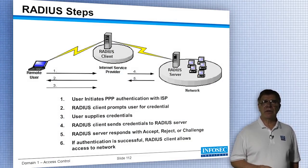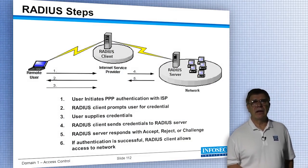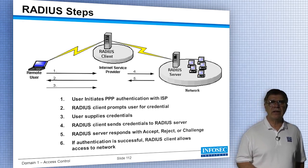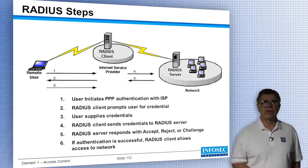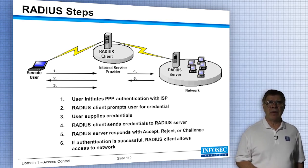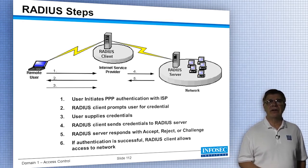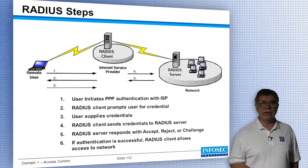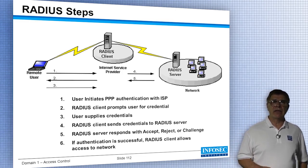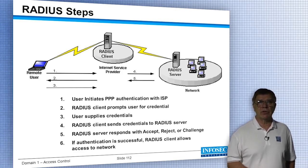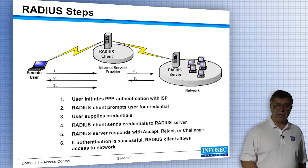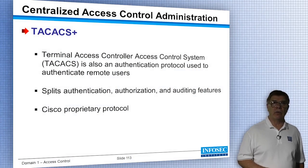The steps in RADIUS: the user initiates a point-to-point protocol authentication with the provider. The RADIUS client prompts the user for credentials — user types in their user ID and password. The RADIUS client sends those credentials to the RADIUS server, which checks them either locally in its own database or against Active Directory, then sends back either an accept, a reject, or a challenge response. If successful, RADIUS allows the client access to the network.